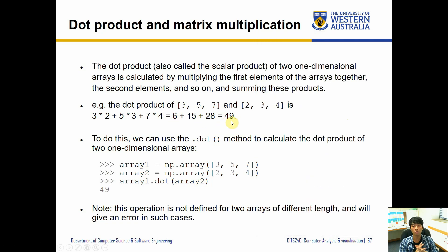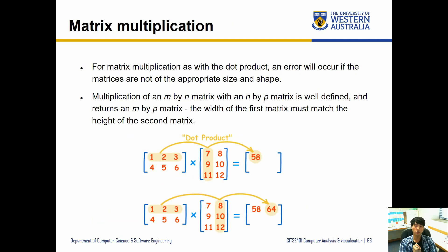Note that the dot product operation is not defined for two arrays of different lengths. So if you want to apply an array-to-array operation, make sure their sizes are the same, otherwise it will give you an error.